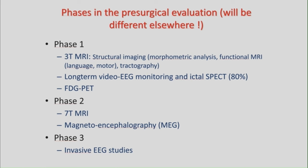These are the different phases in the pre-surgical evaluation at our center, though this will differ between centers according to availability. In phase one, we get a three-tesla MRI with structural imaging, fMRI, tractography, long-term video EEG monitoring, ictal SPECT (obtained in around 80% of patients), and interictal FDG PET. In a later phase, we may obtain seven-tesla MRI and MEG, and in selected patients we perform invasive EEG studies.